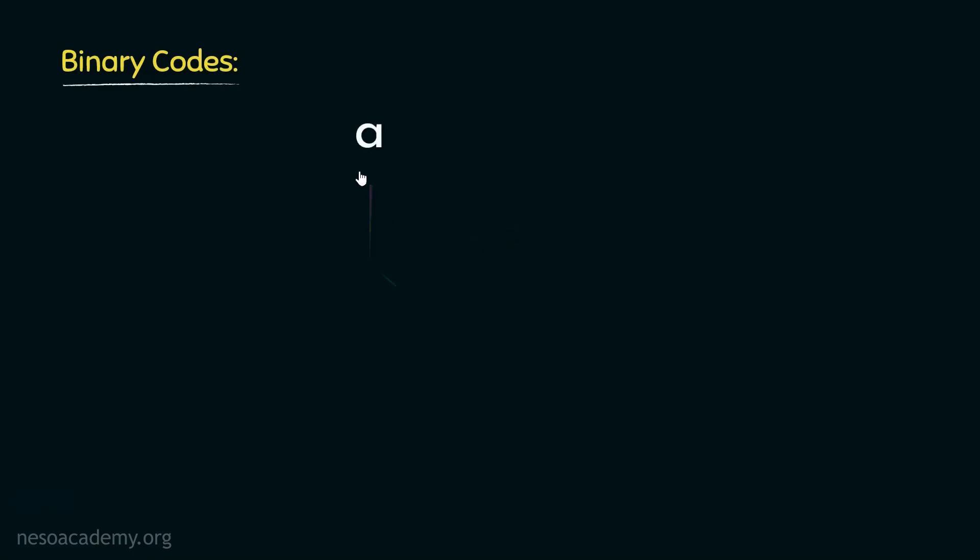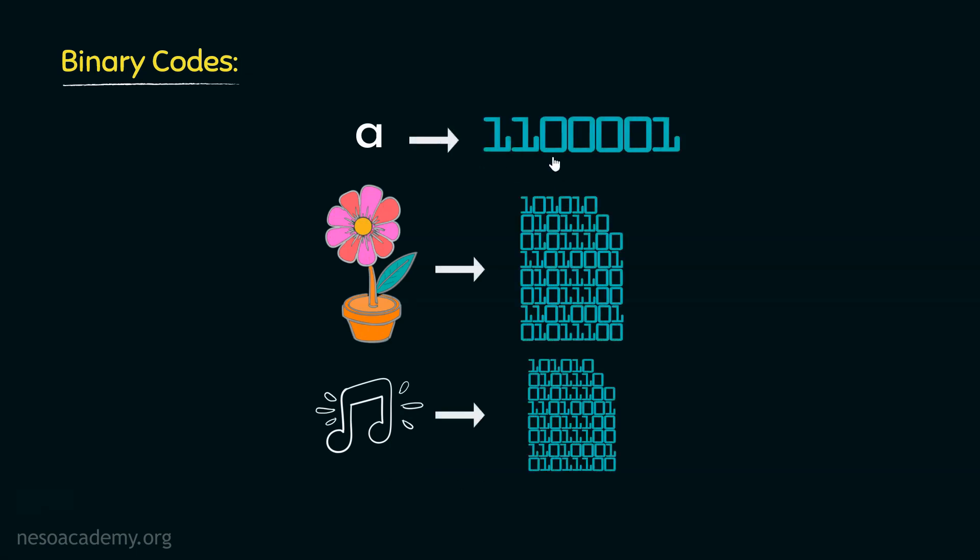Any information, be that a character or an image or an audio file, anything for that matter, needs to be converted into a sequence of 1s and 0s in order to be stored in computers. This is called binary coding.